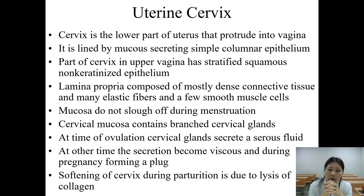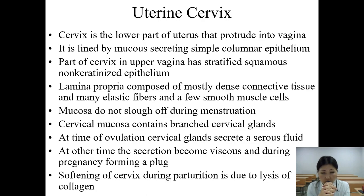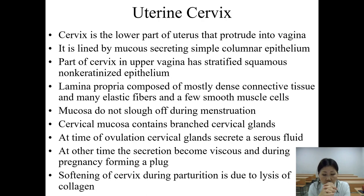Regarding the uterine cervix: the cervix is the lower part of the uterus that protrudes into the vagina. It is lined by mucus-secreting simple columnar epithelium. The part of the cervix in the upper vagina has stratified squamous non-keratinized epithelium. The lamina propria is composed of mostly dense connective tissue with many elastic fibers and a few smooth muscle cells. The mucosa does not slough off during menstruation like the endometrium. The cervical mucosa contains branched cervical glands.